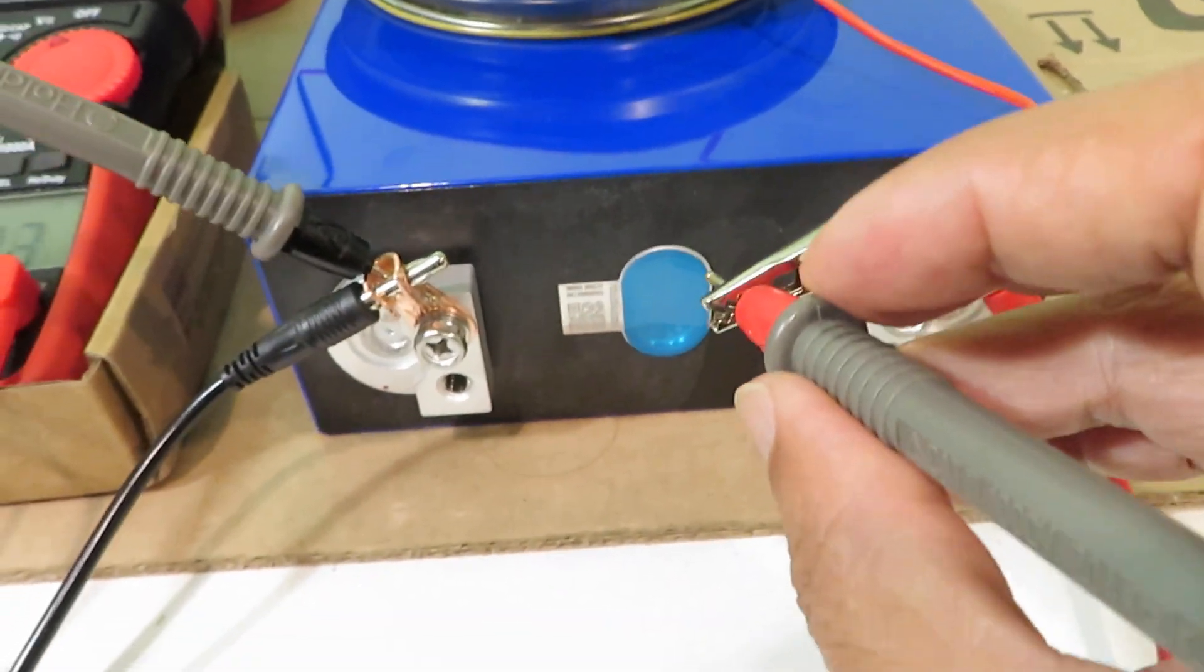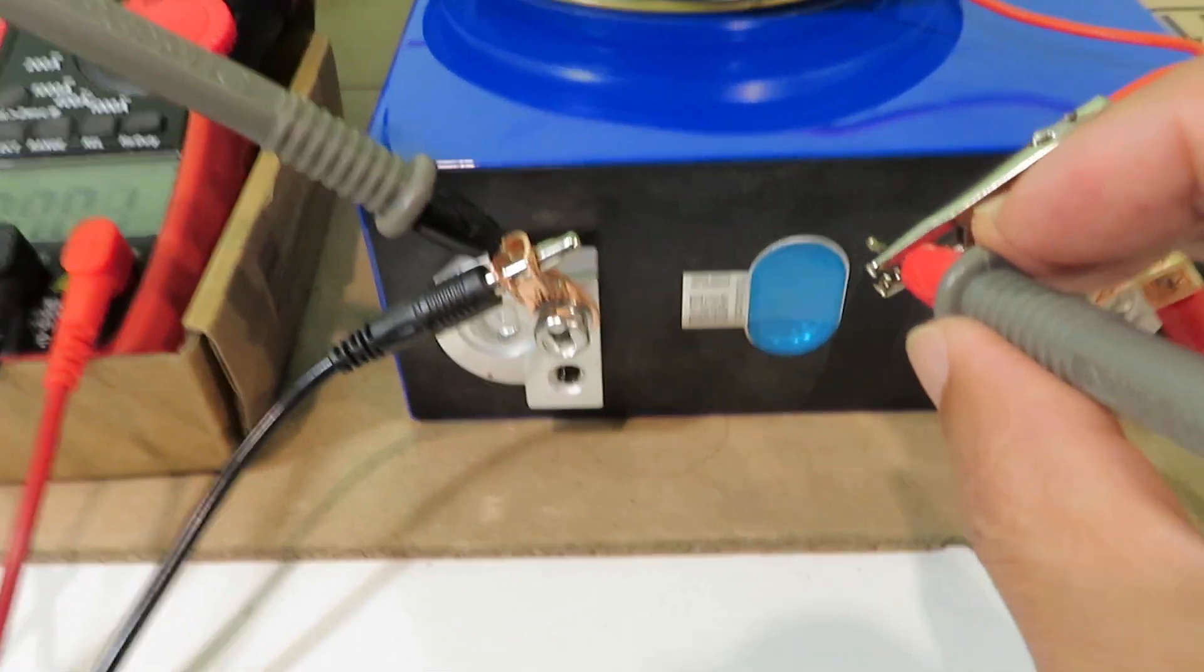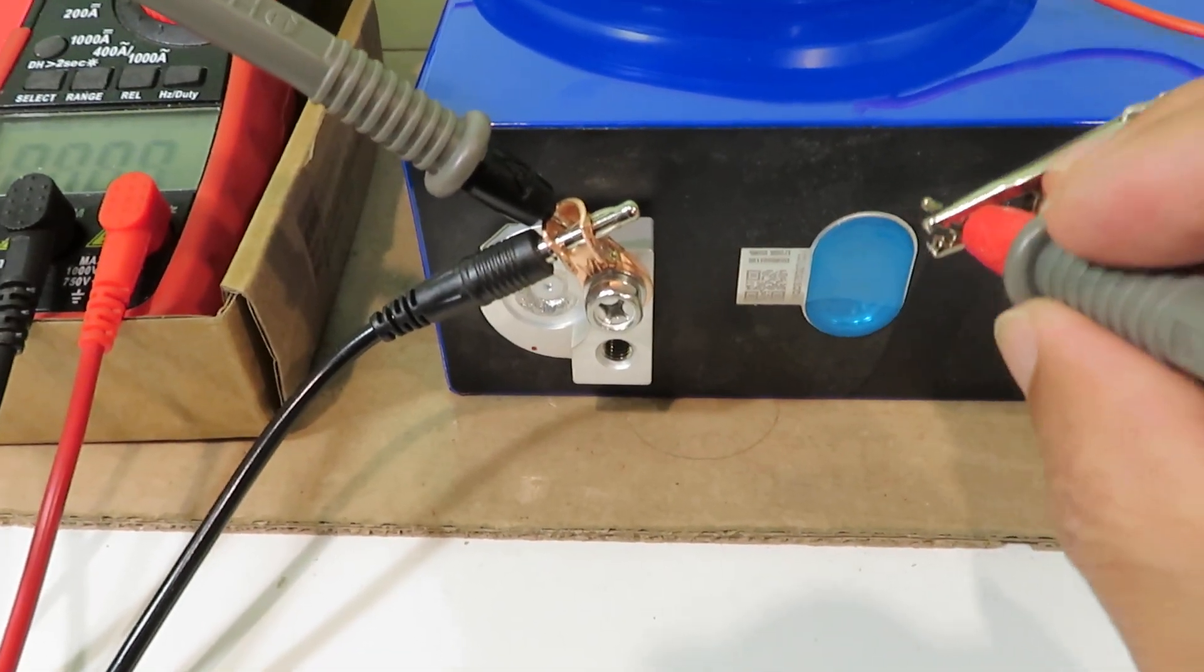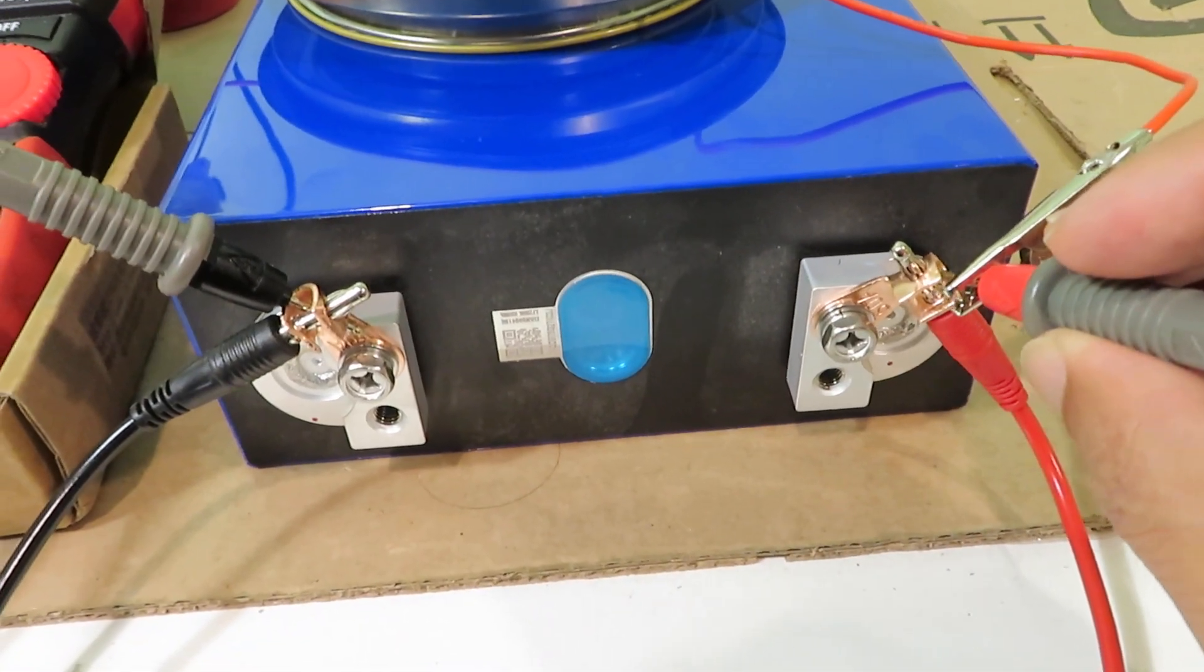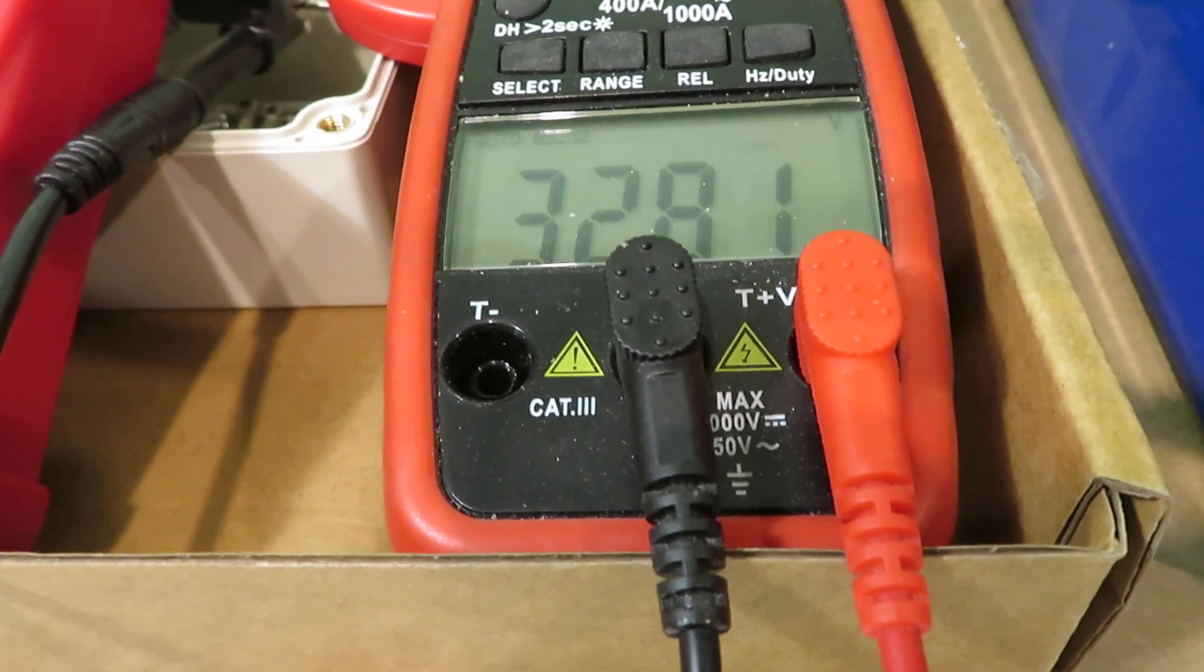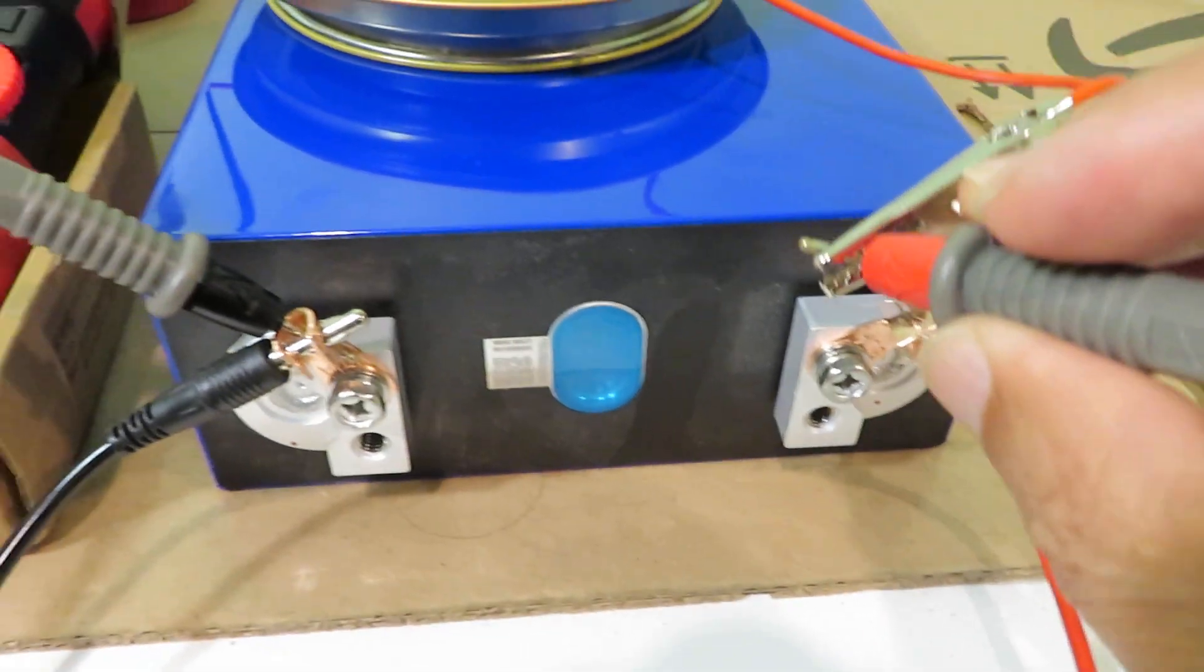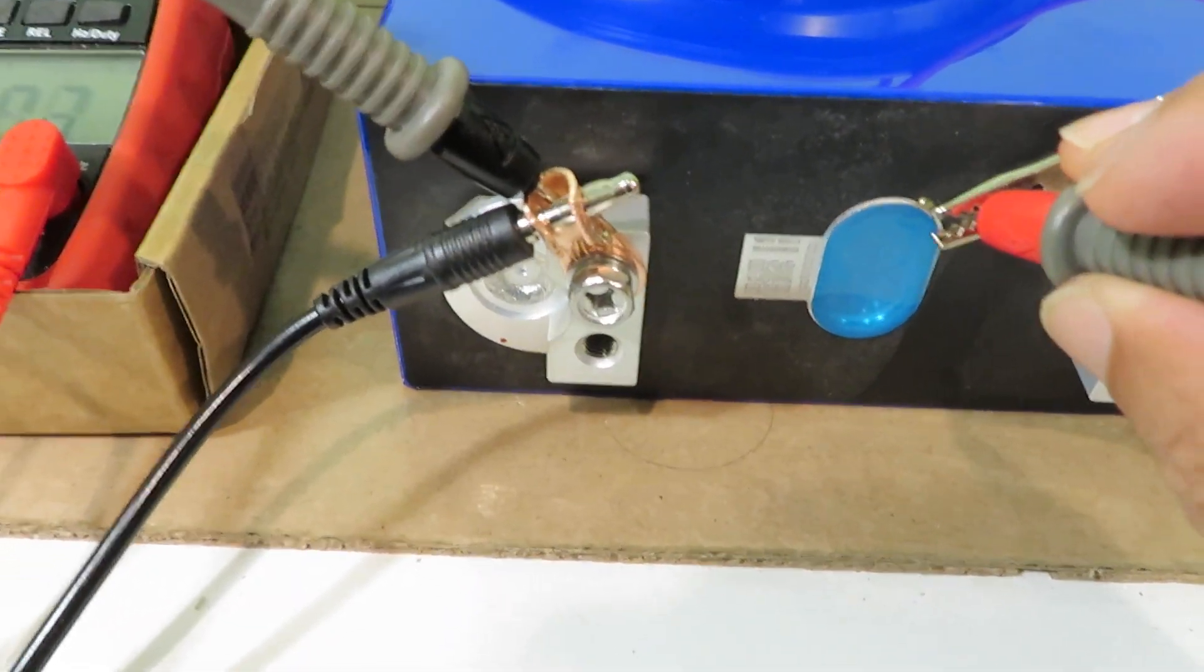And now if the casing is truly the same polarity as the voltage, when I touch this, it should also measure 2.3 amps and 3.281 volts on the positive terminal. So let me touch the casing and see what happens.